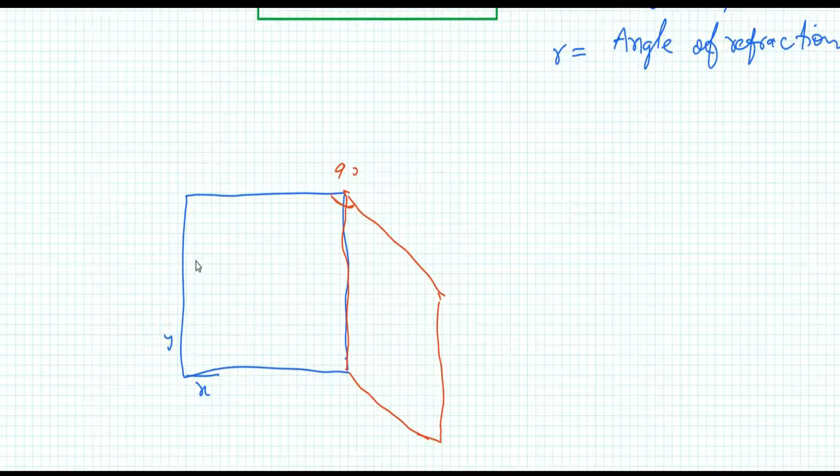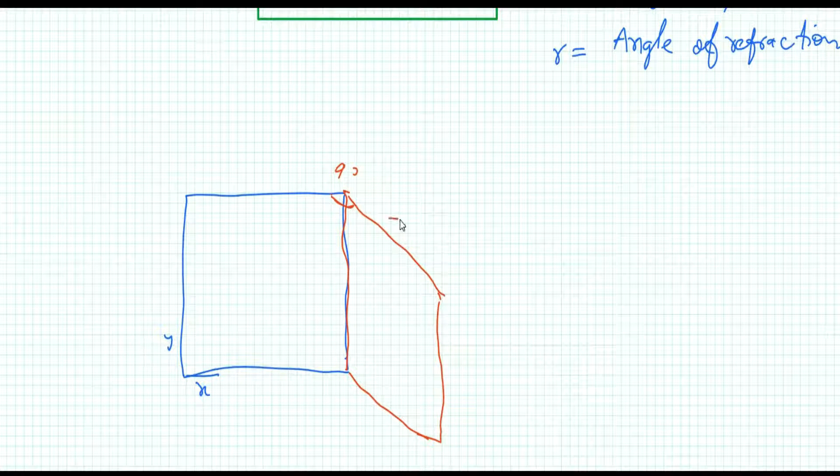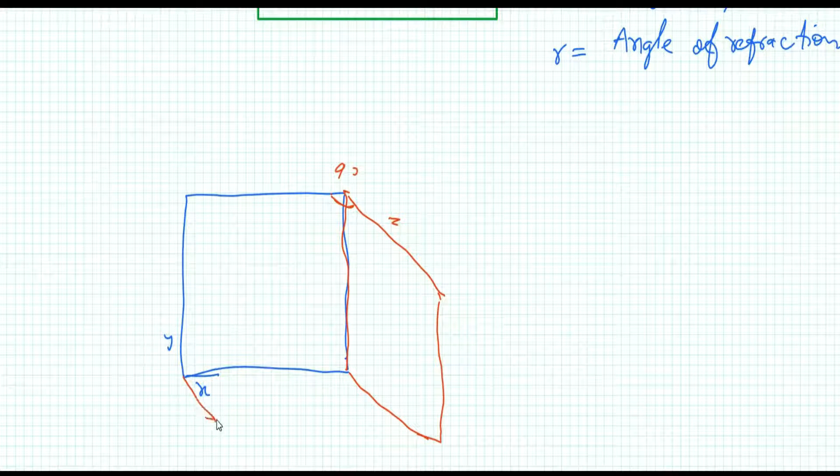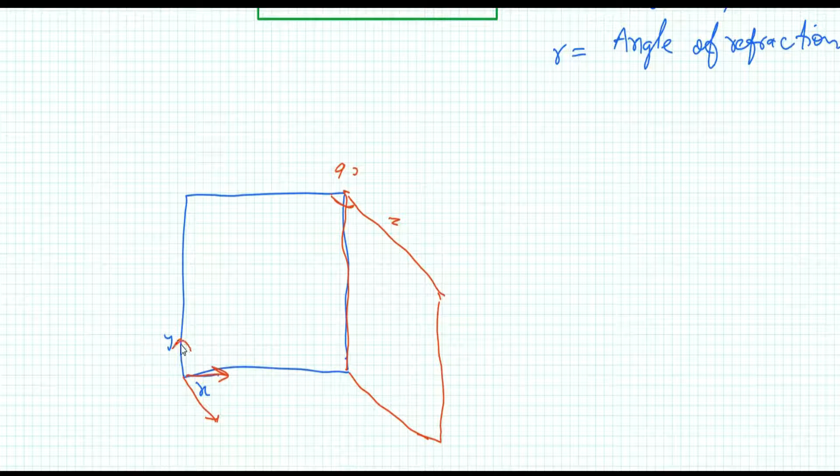So this is XY plane and this axis is the Z axis and it will be indicated from here. If this is X axis, this is Y axis, so that is Z axis.